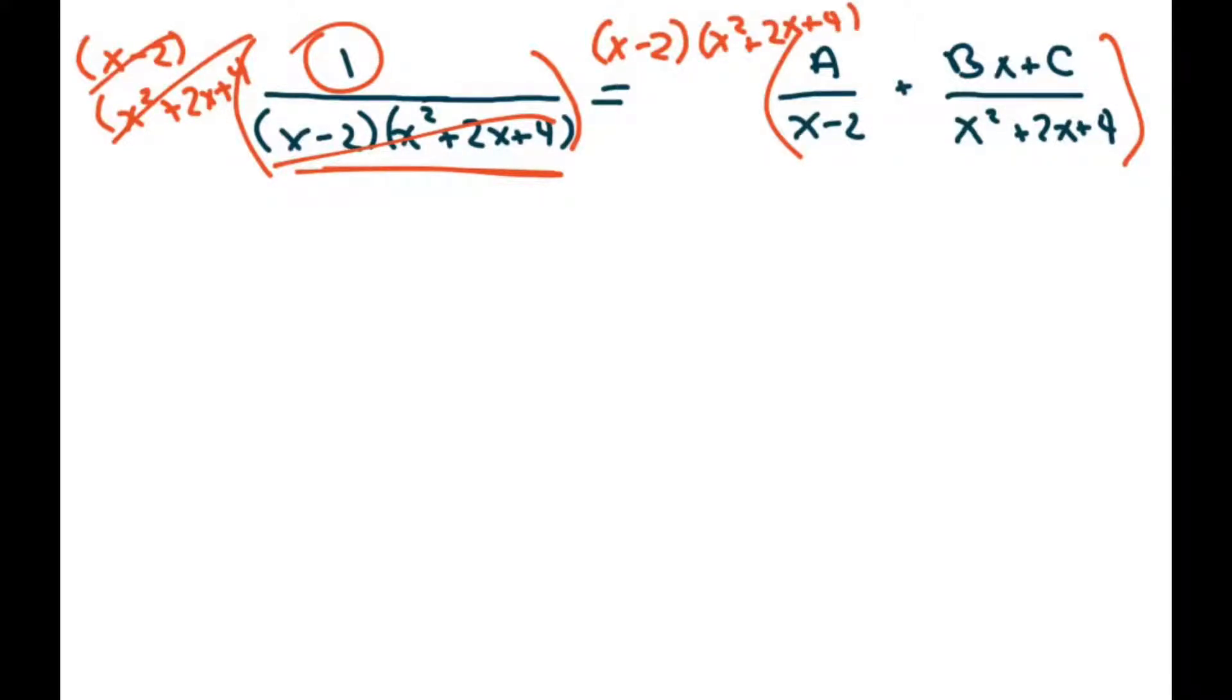That's going to cancel with that, so you're just left with 1 on this side. We also have to multiply it on both sides of the equation, so we have x squared plus 2x plus 4, and then basically what you're going to get is 1 equals, this will cancel out, we're left with A times x squared plus 2x plus 4, and here we have BX plus C, and this cancels out, so we're left with times x minus 2.